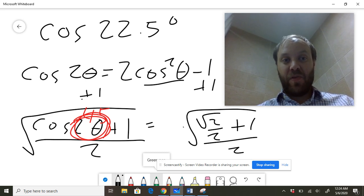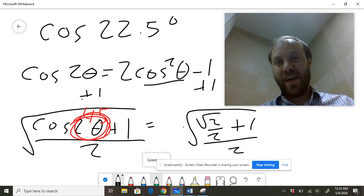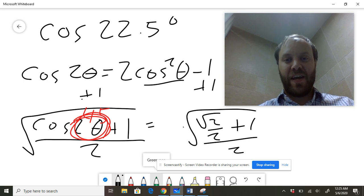And by the way, the same kind of setup, if you want to find cosine of 15, you could put a 15 in the right side of that original equation. That would give you cosine of 30 on the left-hand side. That could be used for any other half of any other trig value you know how to find.